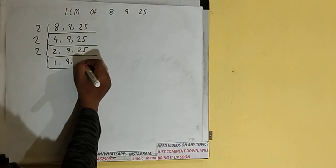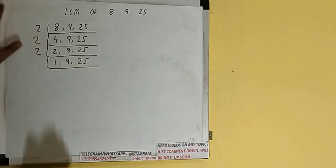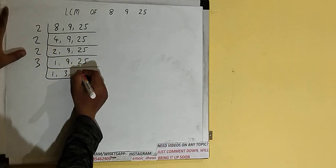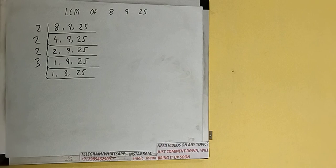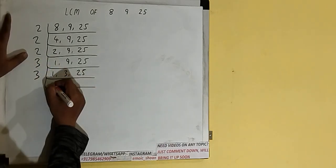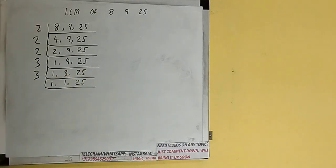Now, none of the numbers is divisible by 2, so we check with the next lowest prime number, which is 3. The second number is divisible by 3, so we divide and we have 1, 3, 25. Again, the second number is only divisible by 3, so we divide and we have 1, 1, 25.